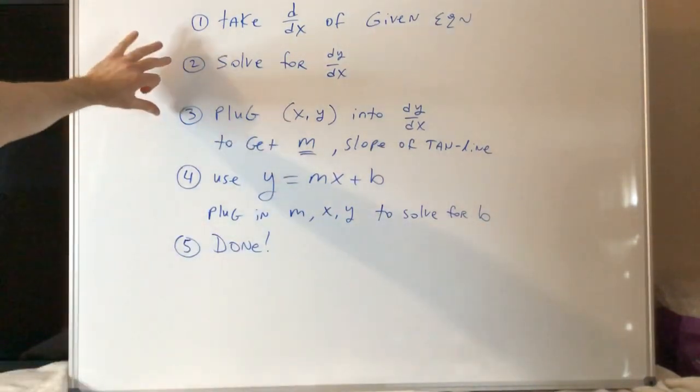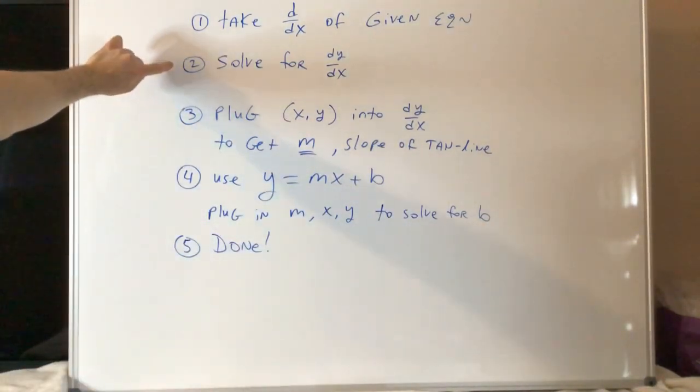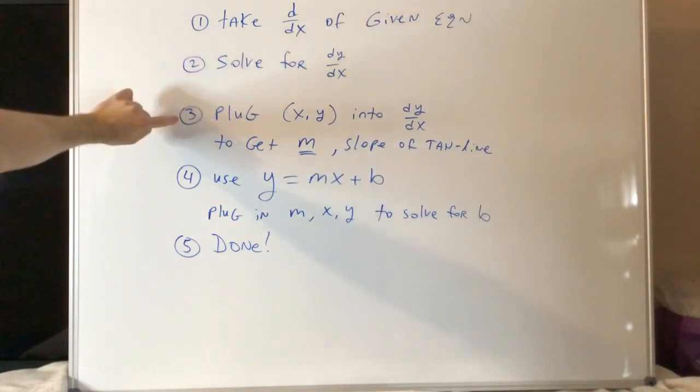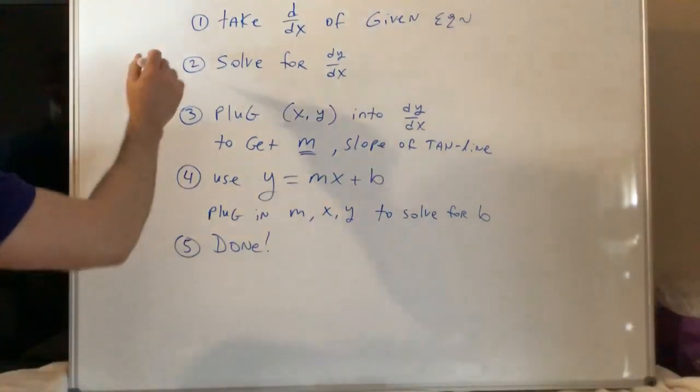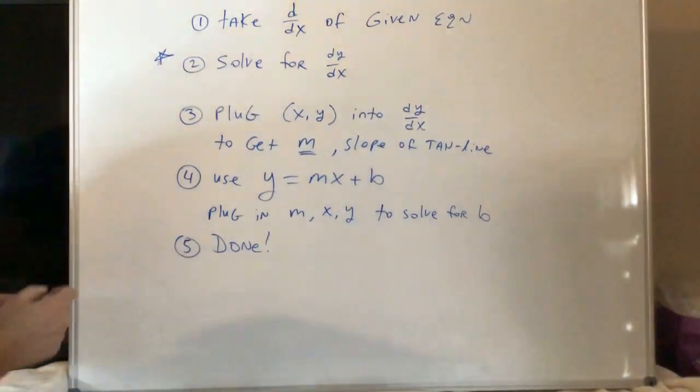So the key step is here. If you do step two wrong, when you plug into that derivative, you're going to get the wrong slope. The whole thing is shot. You have to make absolutely certain that you do this step right. This is very important. You cannot destroy that step.